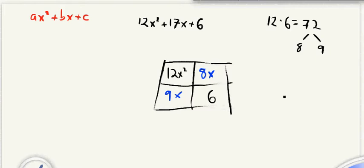So now, what we do is we want to find the greatest common factor of each of the columns and each of the rows. So let's start here. So we look at the numbers, and we want to say what's the biggest number that both 12 and 9 can be divided by? And so for us, that's going to be a 3. And then also, both of these have an x, so we're also going to pull out an x.